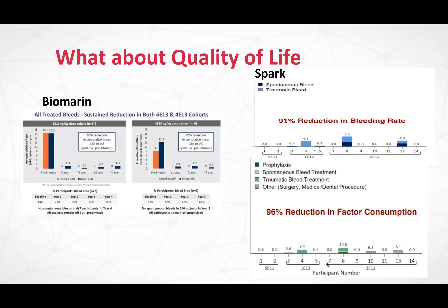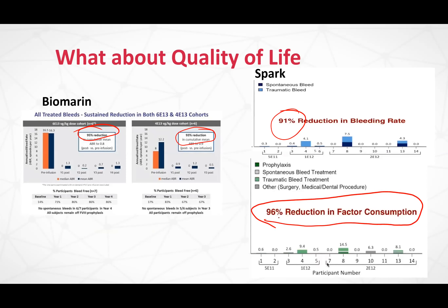Quality of life hasn't been talked about yet, but it's a really important component. In terms of the data from two trials — most have seen similar responses — BioMarin showed a 95% reduction in bleeds over four years of data at the higher dose, and 93% at the lower dose. Spark is showing something similar — a 91% reduction in bleeding rate. There's a significant reduction in factor consumption across the board. People generally come off prophylaxis with very few spontaneous bleeds, and it's mostly traumatic events, surgery, or dental procedures that still require treatment.